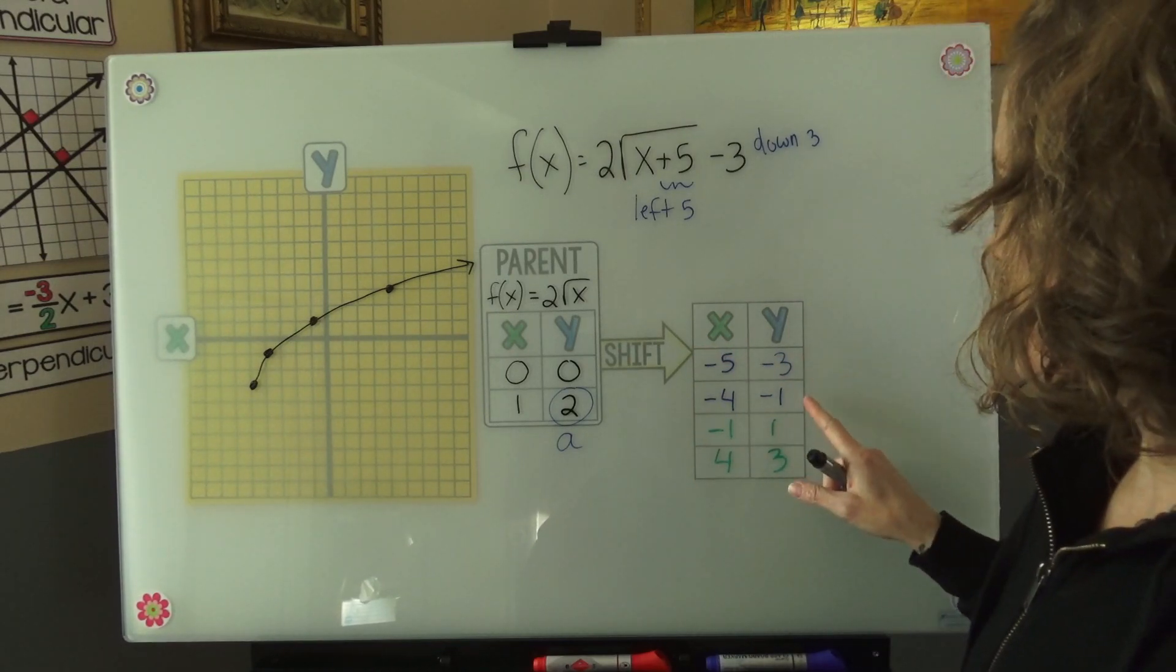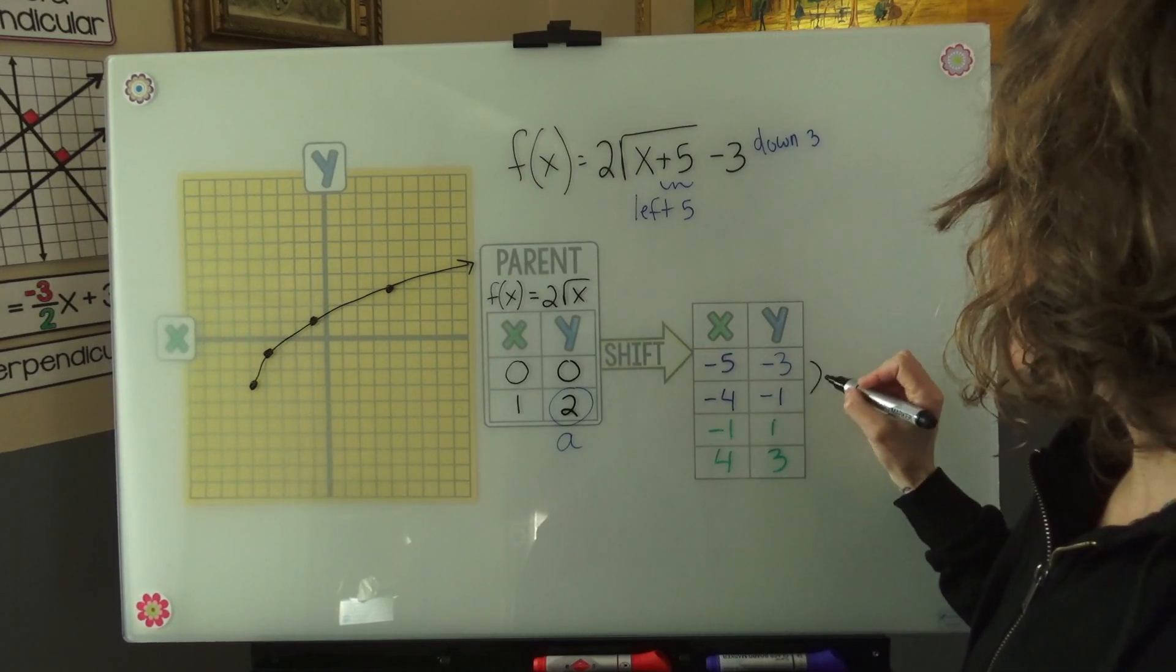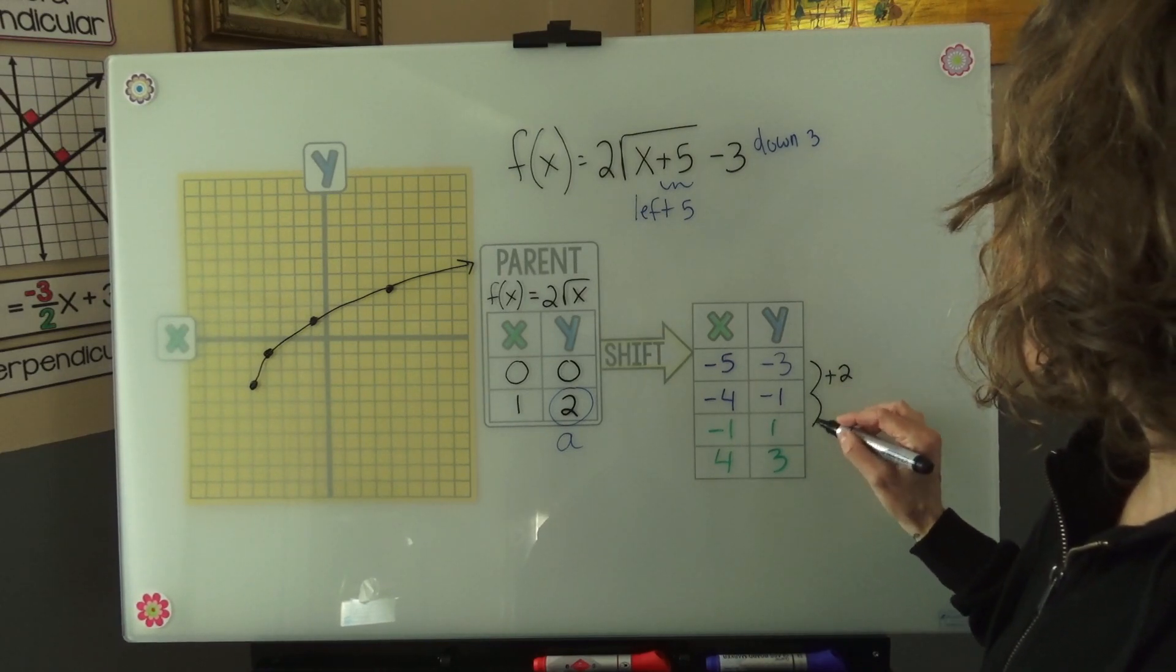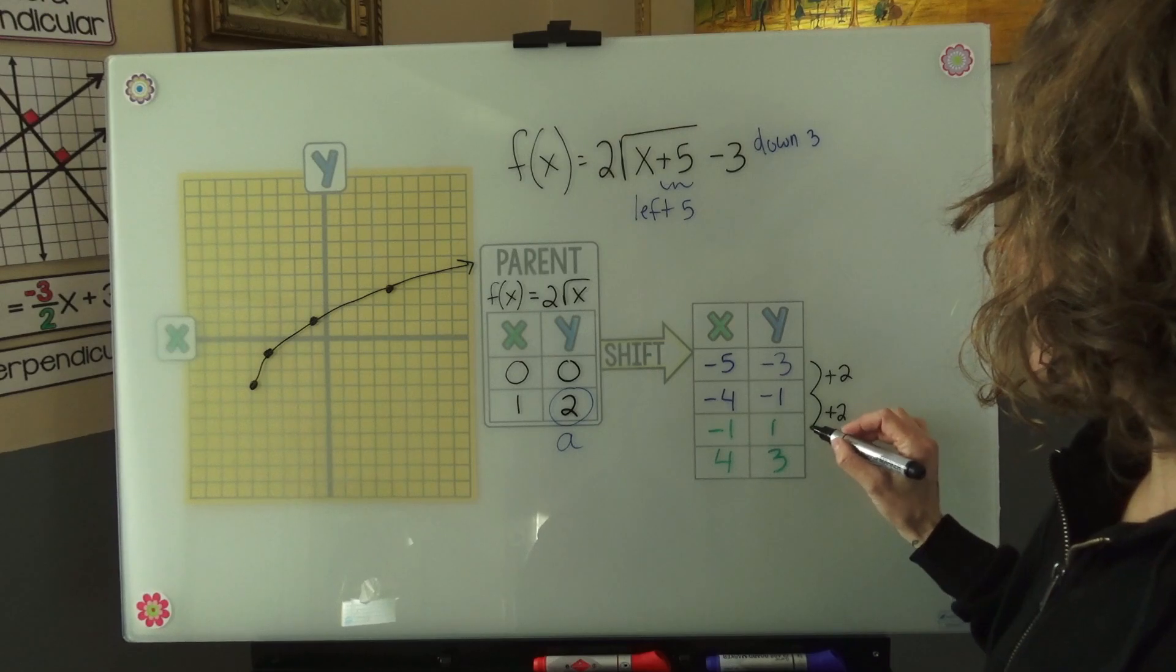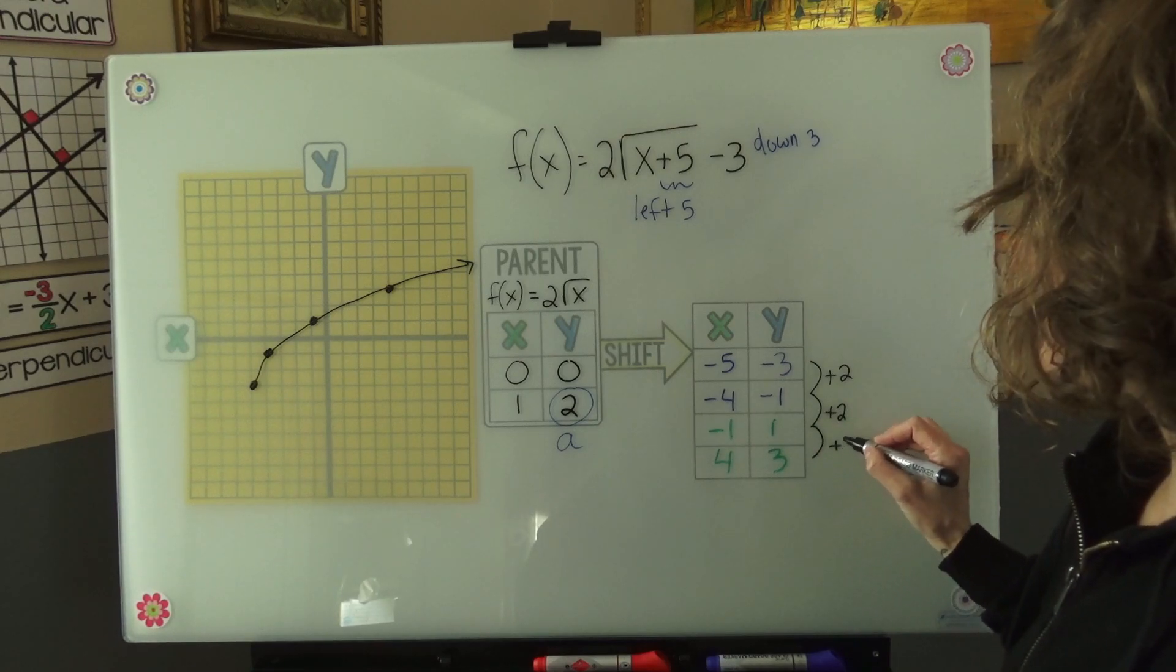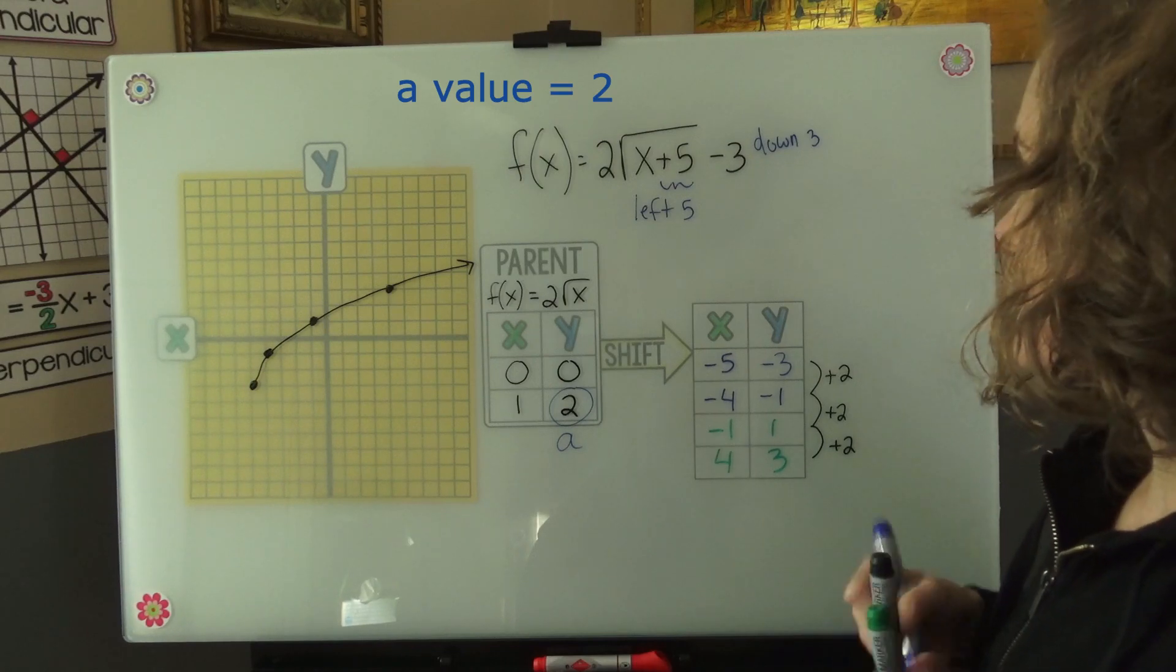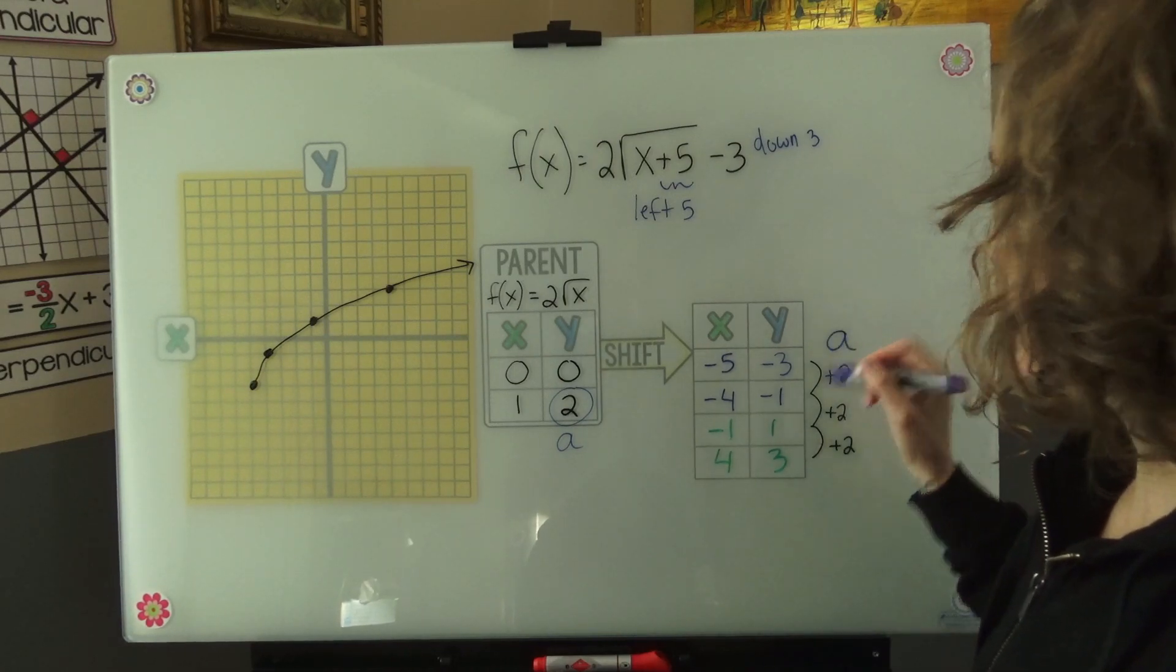And I want to look at the pattern in our table, in our shifted table. Now from negative 3 to negative 1, we went up 2. From negative 1 to 1, we went up 2. And from 1 to 3, we went up 2. This is our a value.